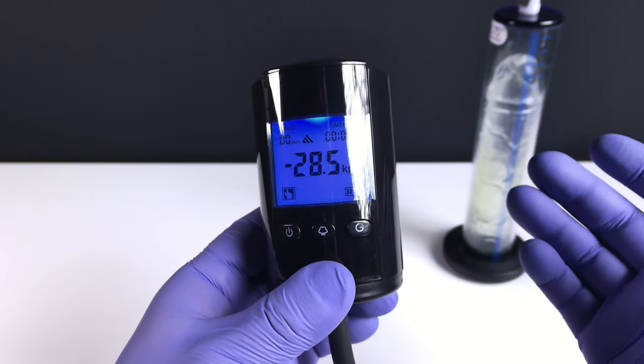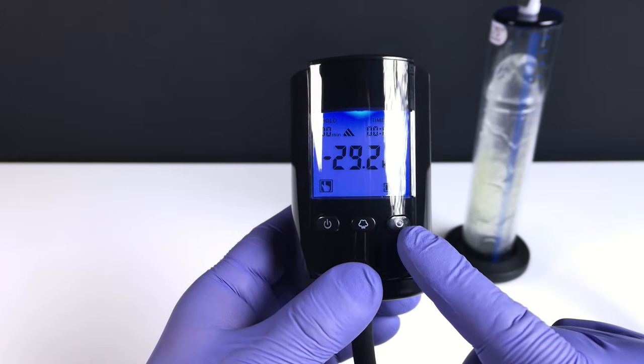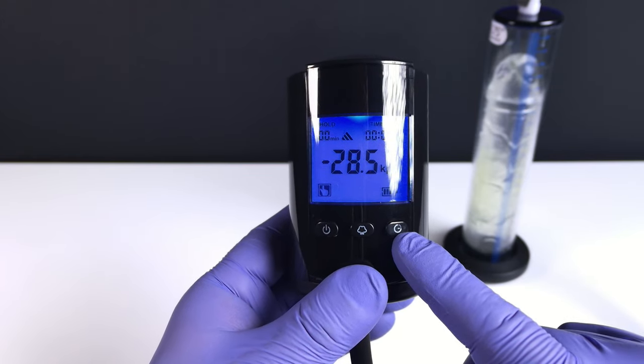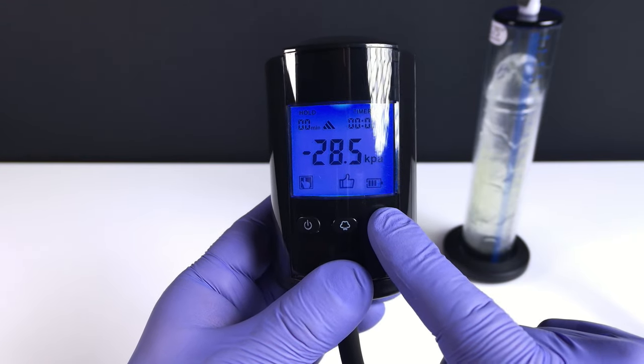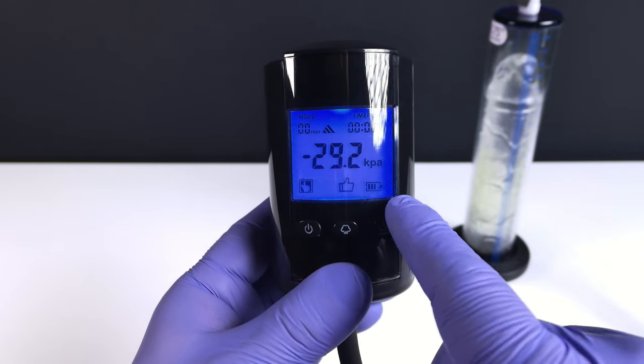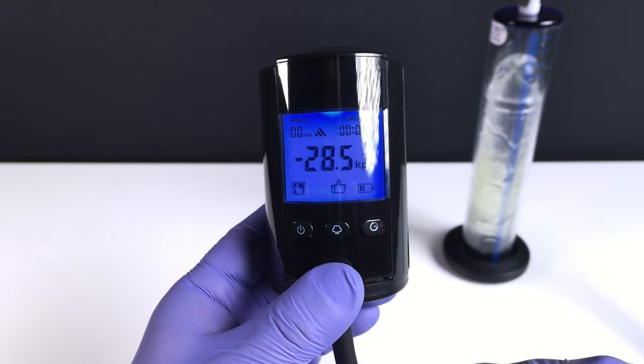We're then going to press and hold the smart button, which is the button on the far right. Press and hold until the smart button icon appears—that's that thumbs up. Once you see the thumbs up, it means that it has effectively memorized this pressure and is now ready to go into interval mode.